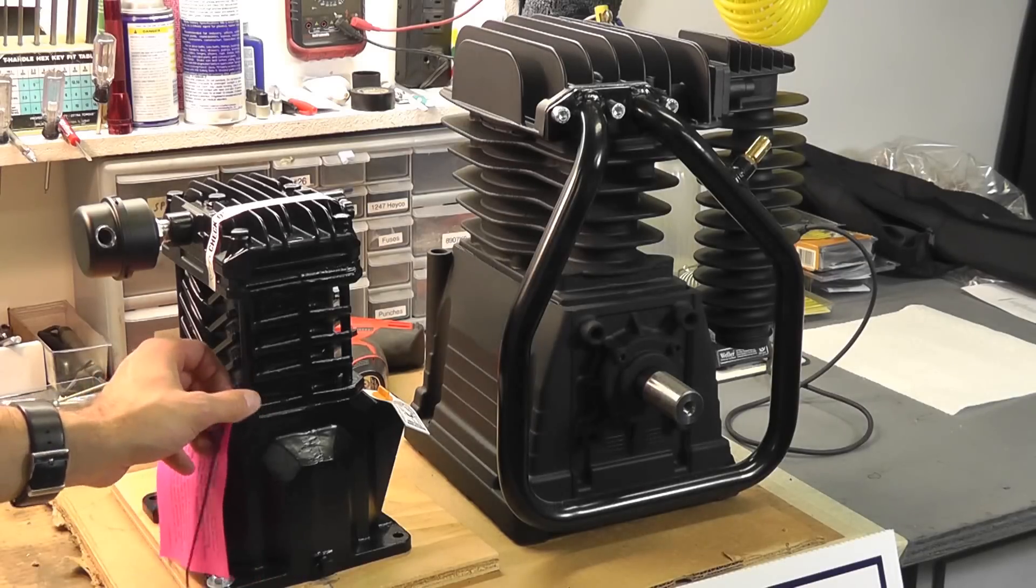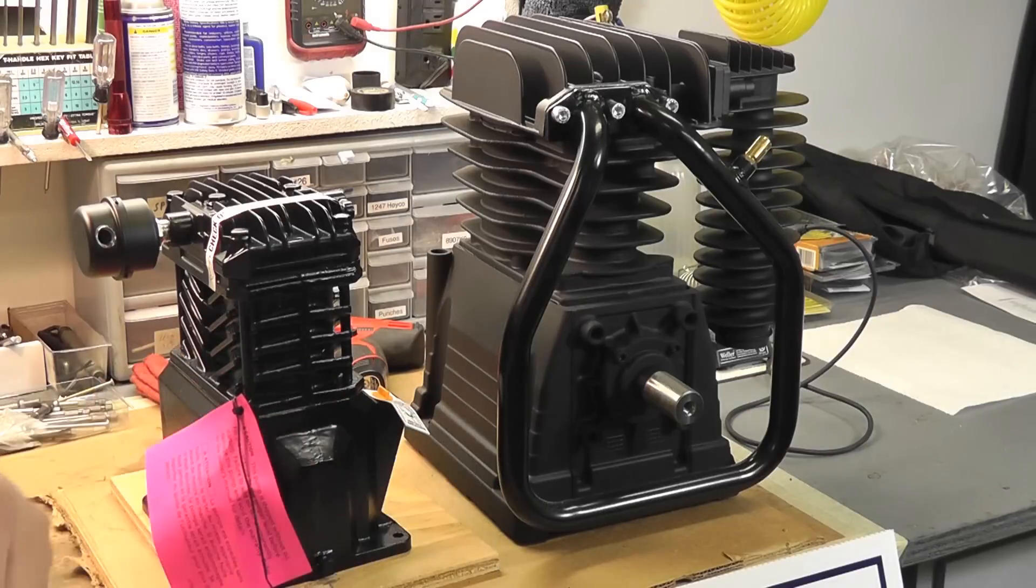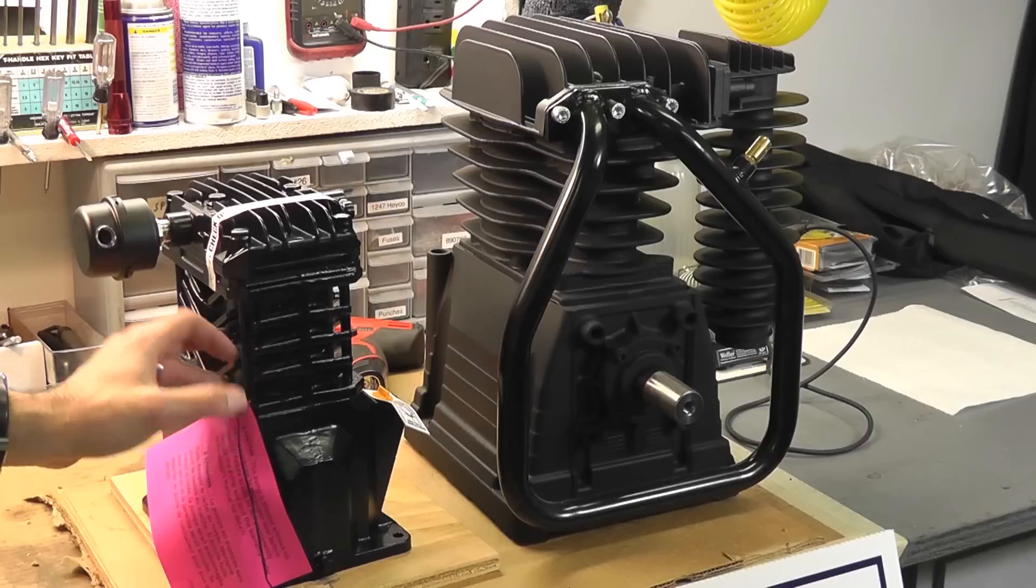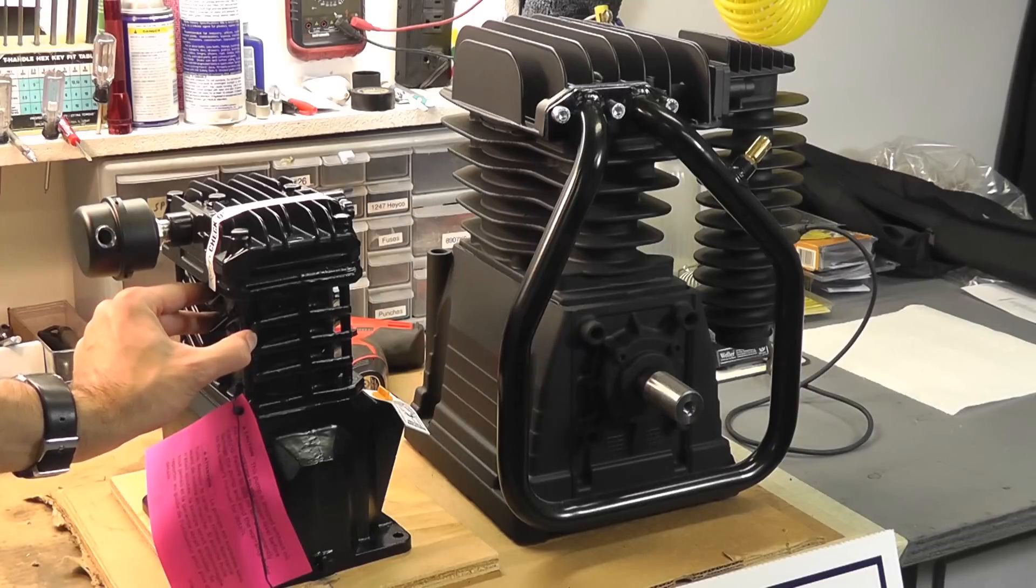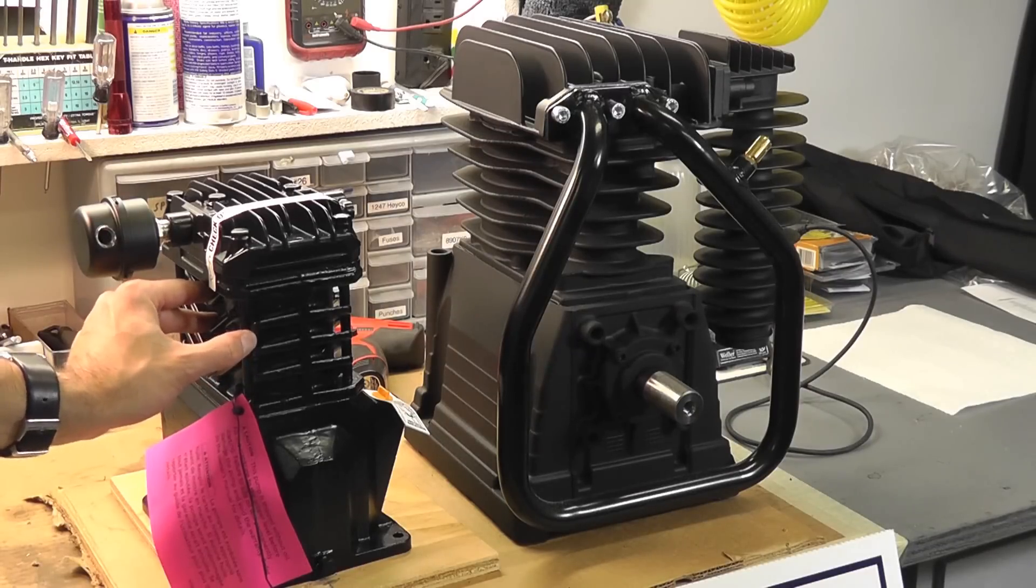So, on a lot of wheelbarrow, gas units, hand carry units, smaller portable units, usually you'll find single stage compressors. Again, they don't recycle as quickly. They don't have a high pressure chamber, so they basically pump up to a lower psi and don't recycle as quickly as two stage.